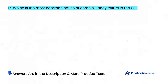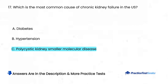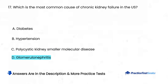Which is the most common cause of chronic kidney failure in the U.S.? A. Diabetes. B. Hypertension. C. Polycystic kidney disease. D. Glomerulonephritis.